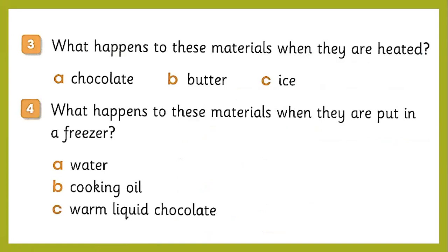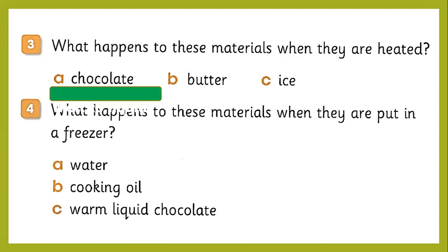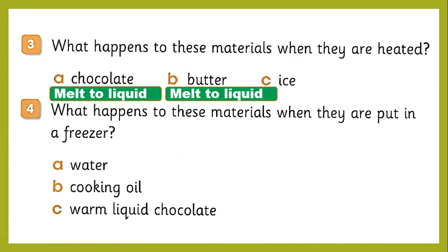Now we have questions from the next page of the learner's book. What will happen when you heat these materials? The first materials are chocolate, butter, and ice. When you heat chocolate, it will melt — changing from solid to liquid. Butter also melts to liquid when you give it heat. The same happens with ice.